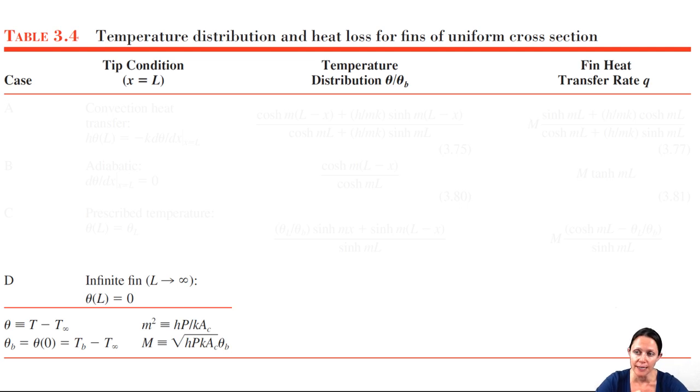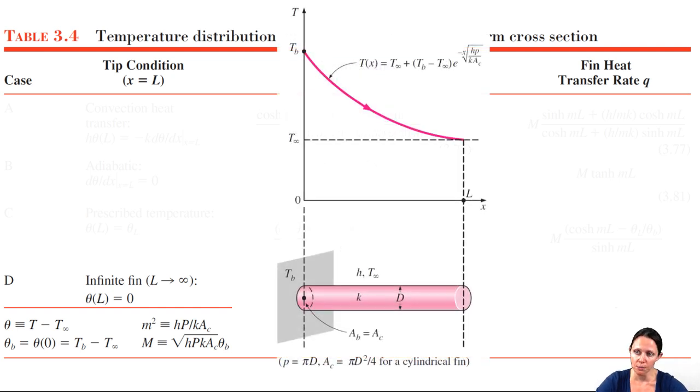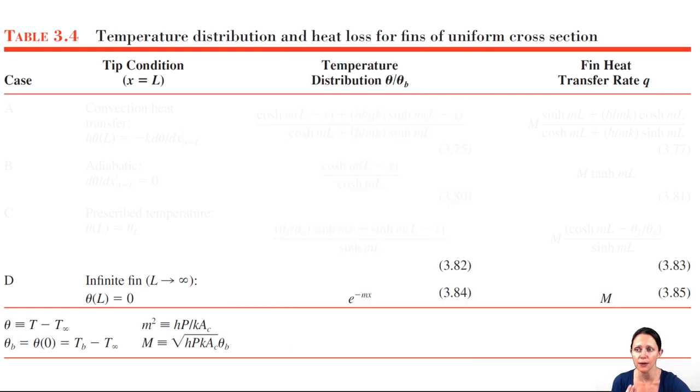In this case, the fin is long enough so that the temperature at the tip will be at the temperature of the fluid. We can see the temperature distribution in such a tip here. The temperature decreases exponentially along the length of the fin. Now, if we assume the fin is long enough that that happens, we get a very simple equation for the temperature distribution and heat transfer rate through the fin.